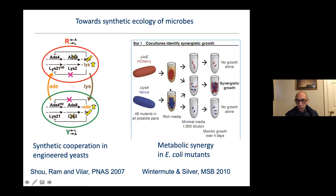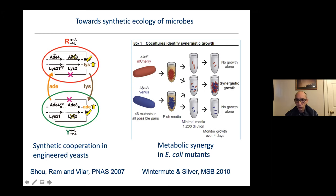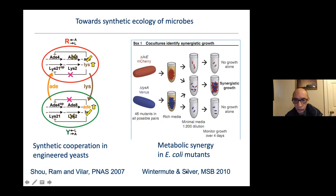Another example focused on finding different types of interactions rather than engineering them. This was done with E. coli mutant strains — individually they grow fine in rich medium but very poorly in minimal media because they lack capacity to synthesize amino acids. Occasionally when put together, synergistic growth could be seen — a way of detecting new interactions. This work by Ed Wintermuth and Tom Silver identified a number of new interactions.